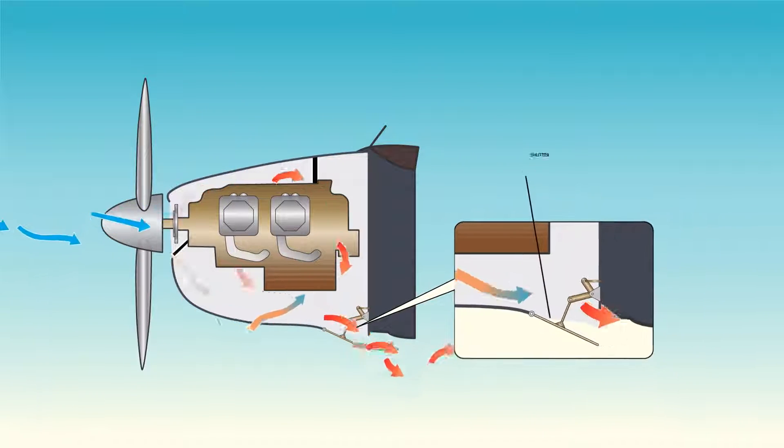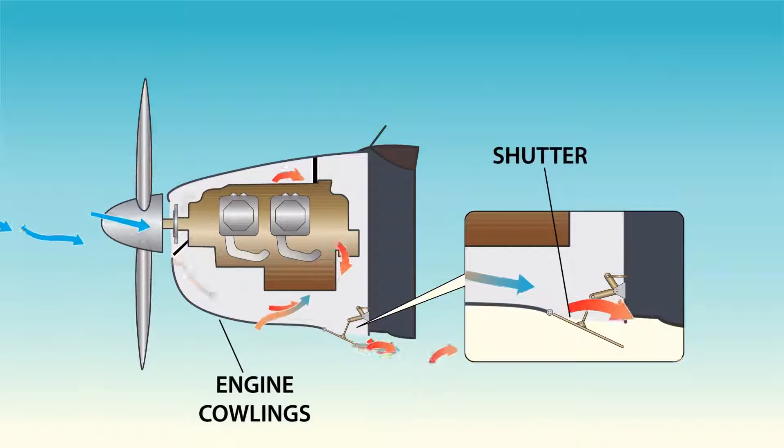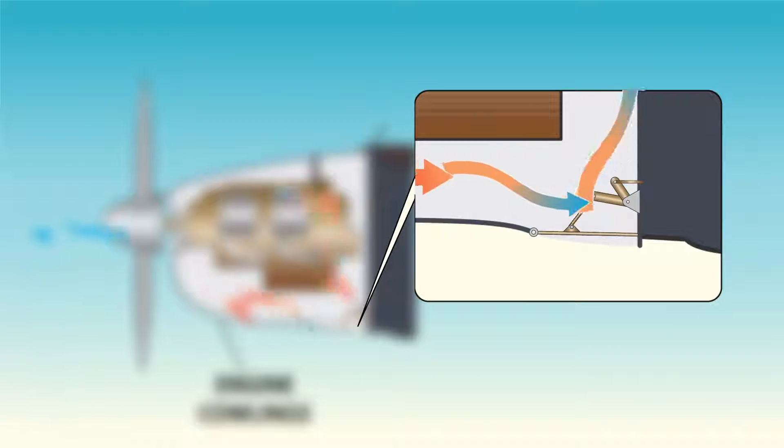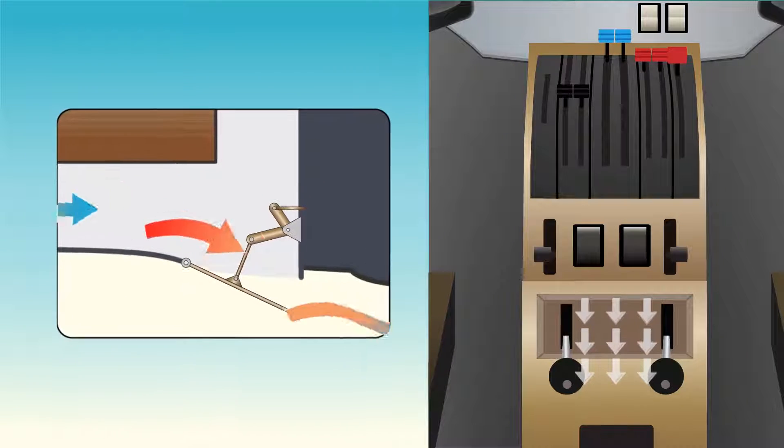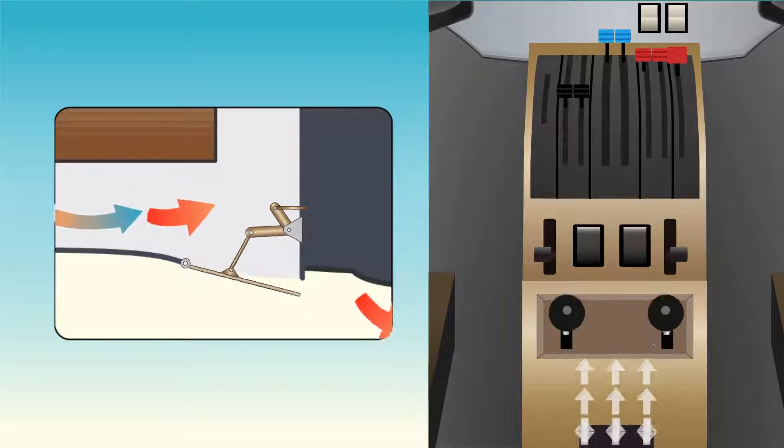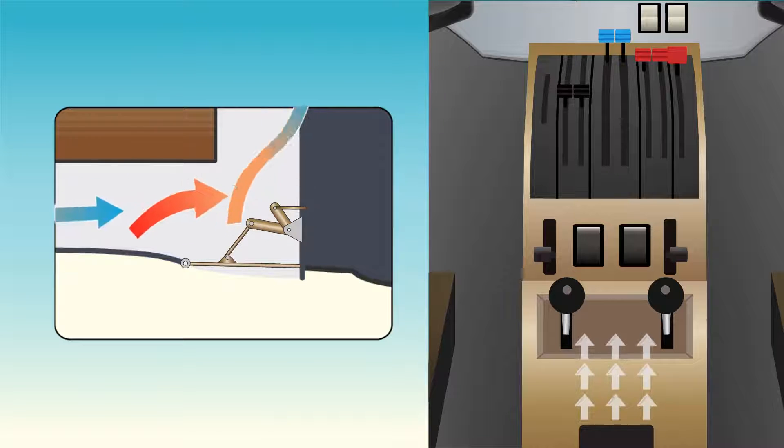Cowl flaps are shutter-like devices arranged around air-cooled engine cowlings, which may be opened or closed to regulate the flow of air around the engine. The shutter-like devices are controlled by the pilot by a lever in the cockpit to open or close the cowl flap.